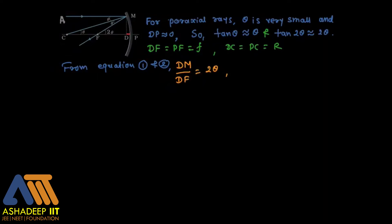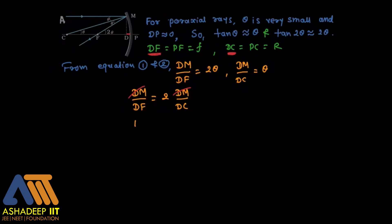From equations 1 and 2, DM divided by DF equals 2 theta and DM divided by DC equals theta. Substituting and cancelling DM from both sides, we get DC equals 2 times DF. Substituting the values, PC equals 2 times PF, therefore R equals 2f.